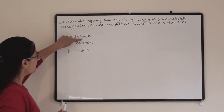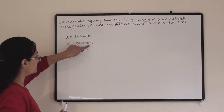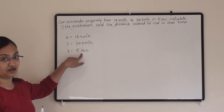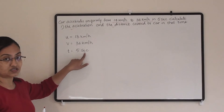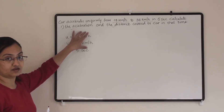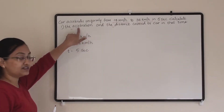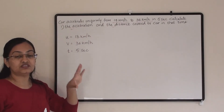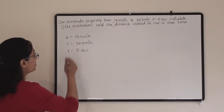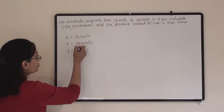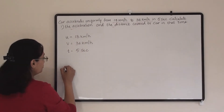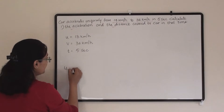Now here the velocities are in km/h but the time is in seconds. So either you can convert the time into hours or convert the velocities into meter per second. Since our acceleration's unit is meter per second square, we need to convert both velocities to meter per second.